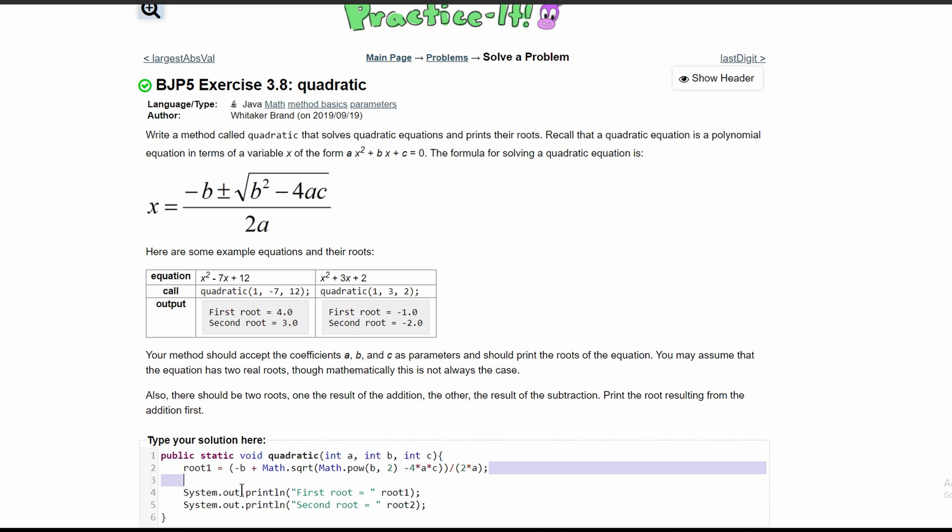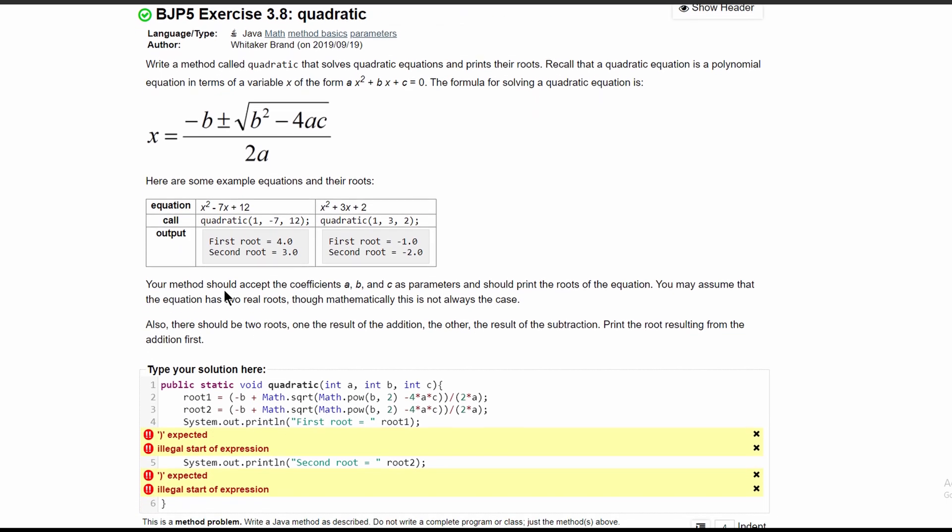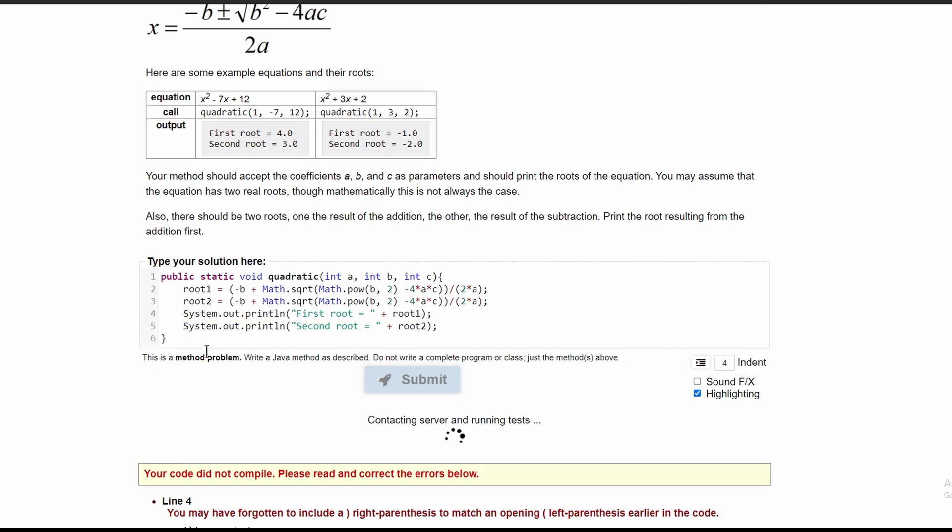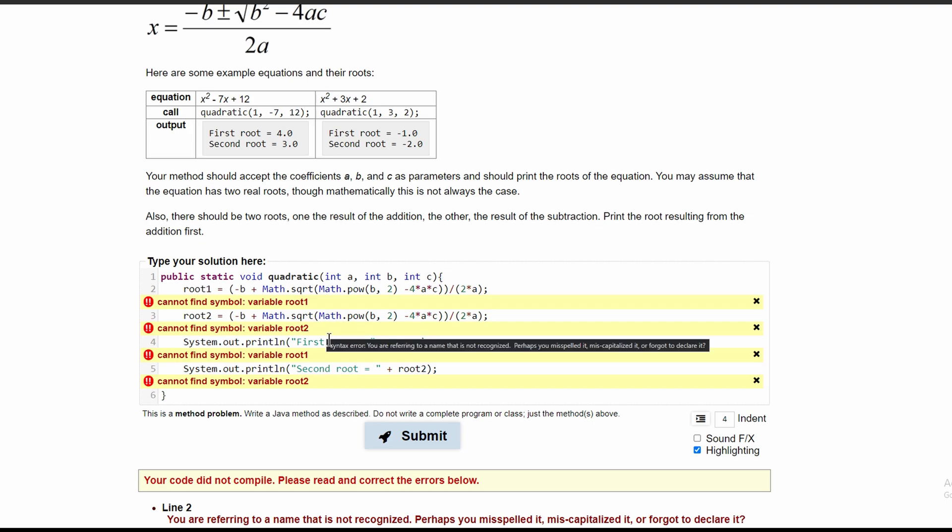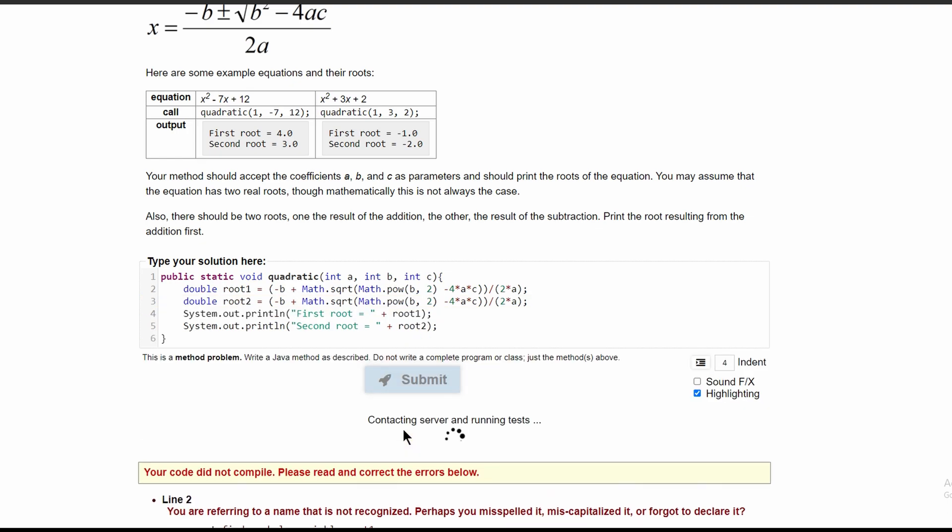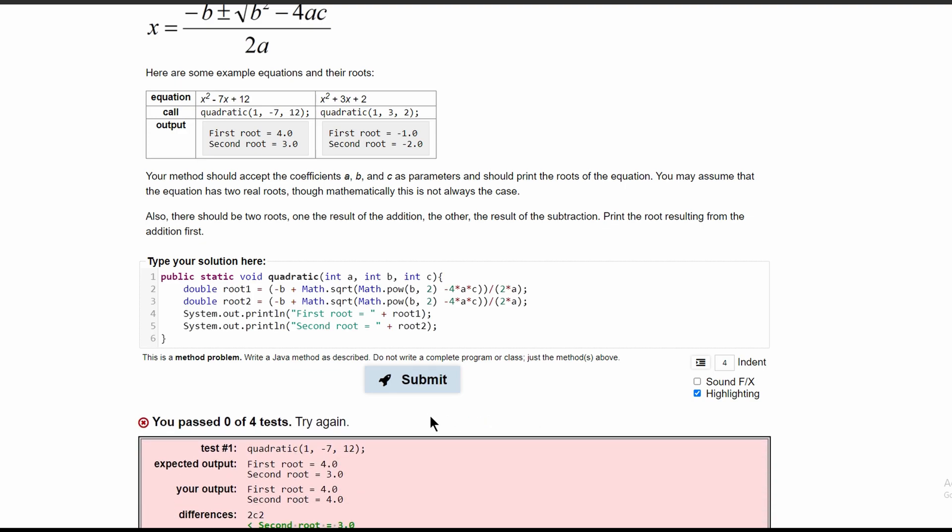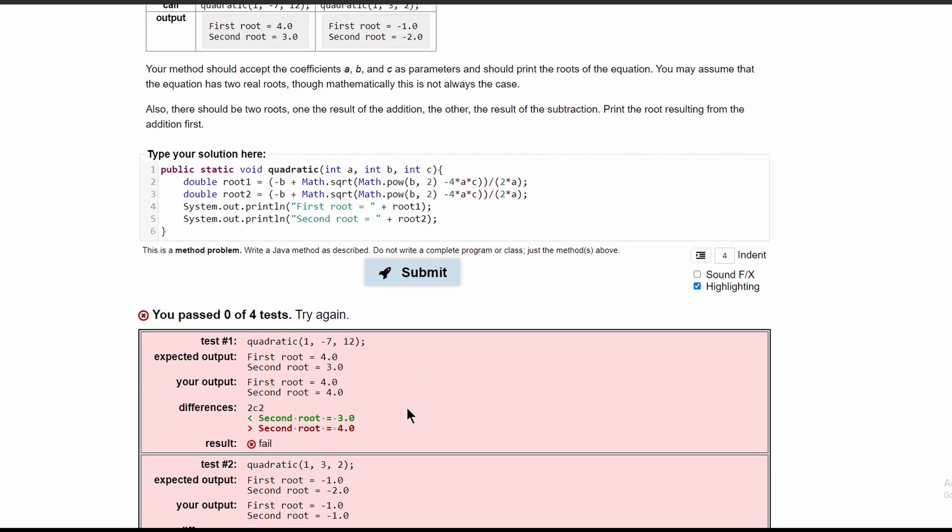This is the math for it, and we can copy this right here for root2. This should be the code that produces the output. But we have an issue right here - we need pluses in here to combine the strings. We also need to initialize our roots to be doubles. After we submit it, we have some issues.